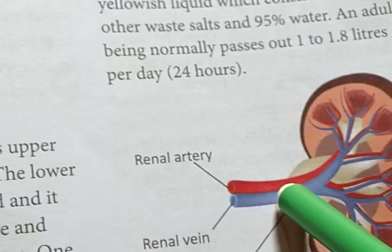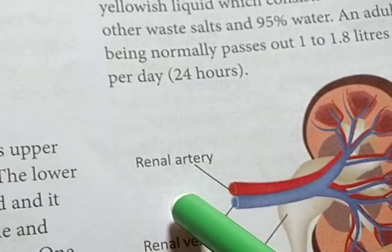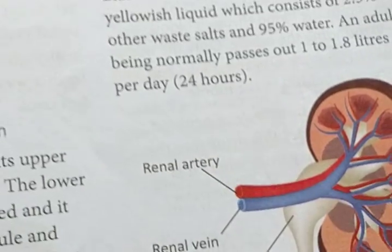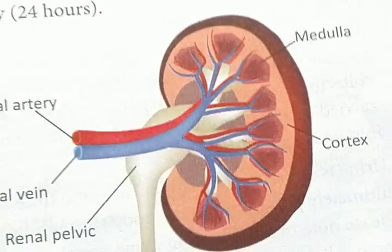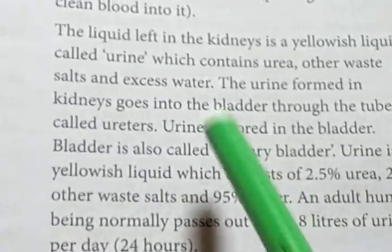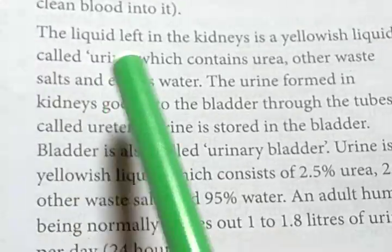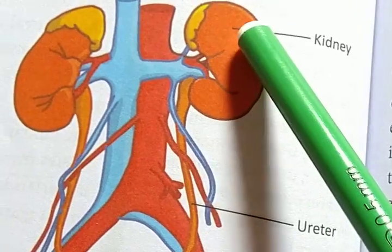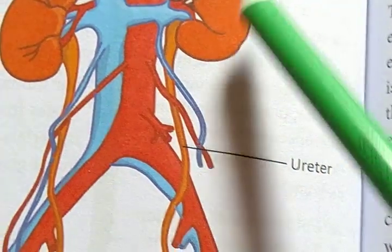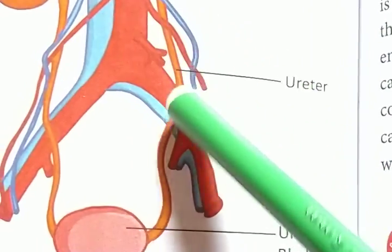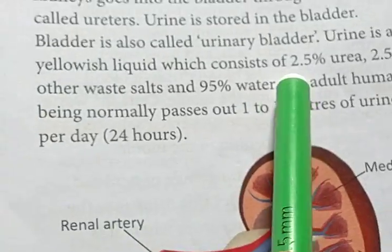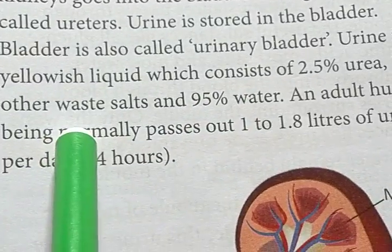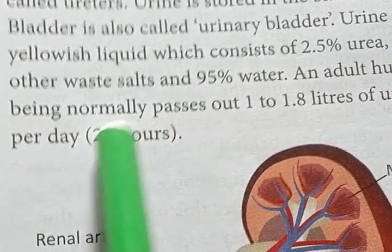After filtering, fresh blood is released into the renal vein. After complete filtration, a yellowish liquid remains in the kidney — this is urine. The urine formed in the kidneys passes through the ureter and is stored in the urinary bladder. Urine consists of 95% water, 2.5% urea, and 2.5% unwanted salts. Every adult releases 1 to 1.5 liters of urine per day.